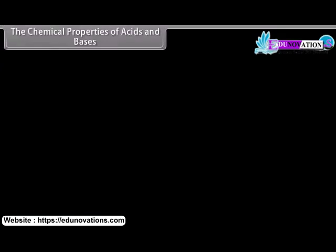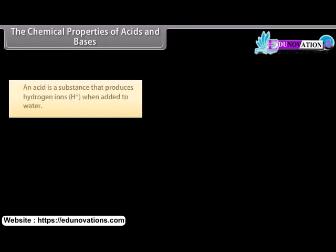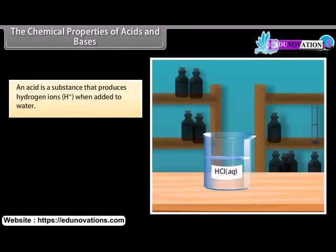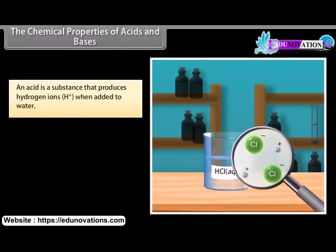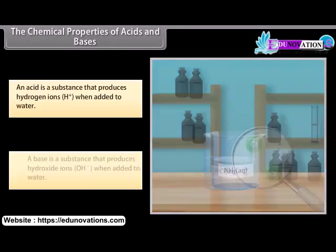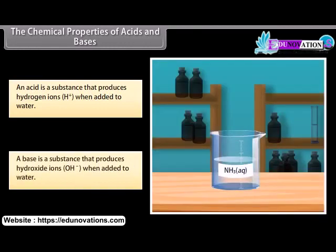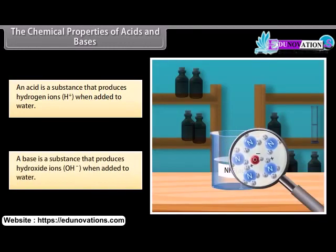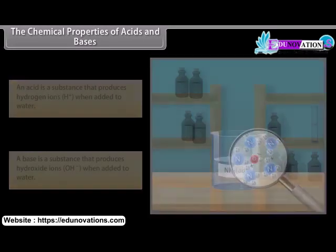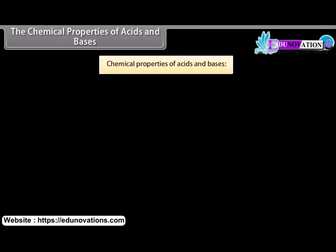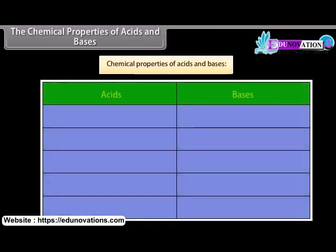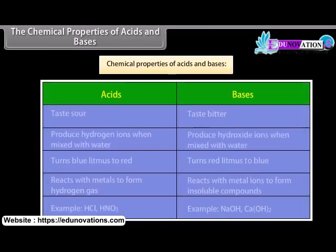The chemical properties of acids and bases: An acid is a substance that produces hydrogen ions when added to water, whereas a base is a substance that produces hydroxide ions when added to water. Both acids and bases have different chemical properties. Let us look at their properties.